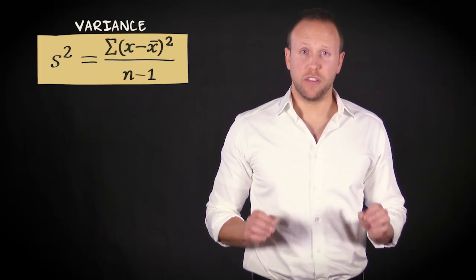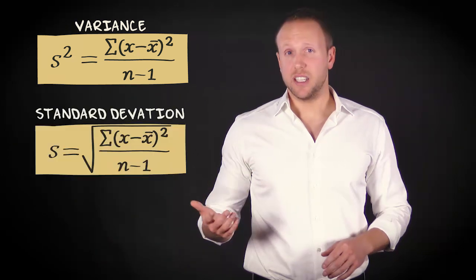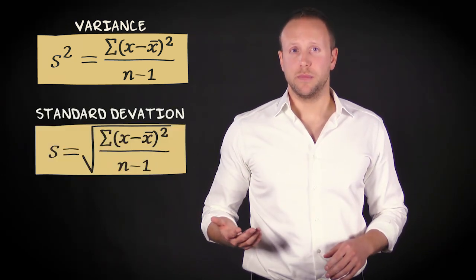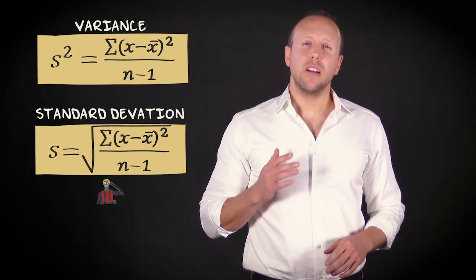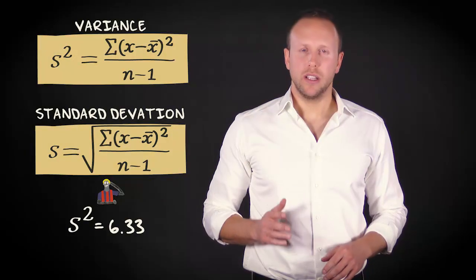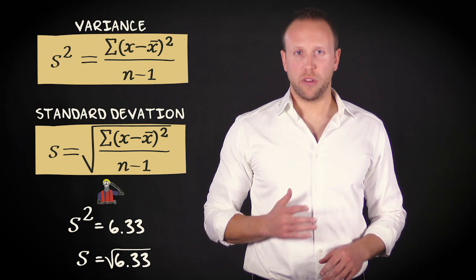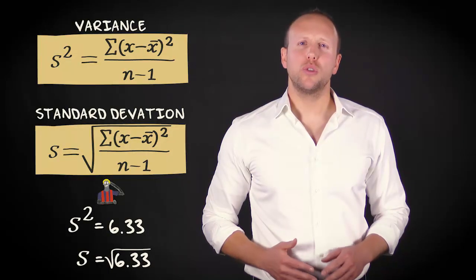Because this is the formula of the variance, this is the formula of the standard deviation. So, in our example, the standard deviation of team 1 is the square root of 6.33. That equals 2.52.